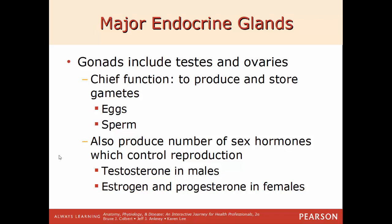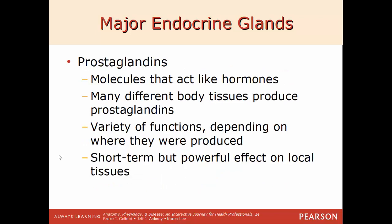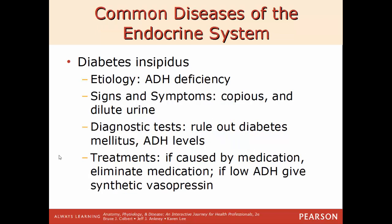The gonads are the primary sex organs — testes in males and ovaries in females. Their chief function is to produce and store gametes (sperm in males, eggs in females). They also produce sex hormones controlling reproduction: testosterone in males, and estrogen and progesterone in females. Prostaglandins are molecules that act like hormones; many different body tissues produce a form of prostaglandins with a large variety of functions depending on where they are produced, with powerful but short-term effects on local tissues.